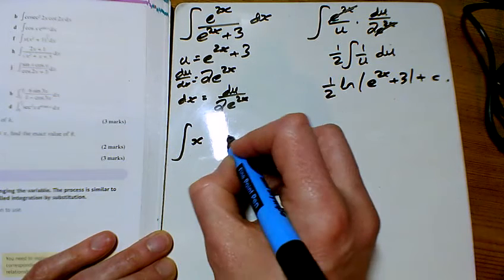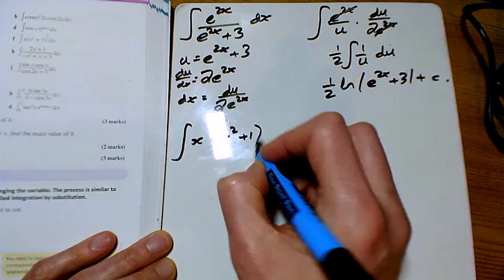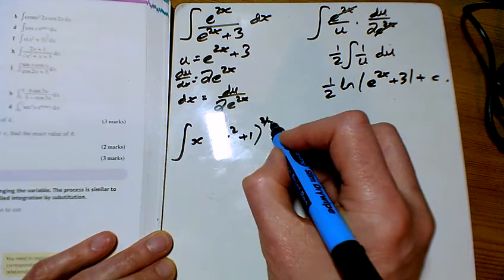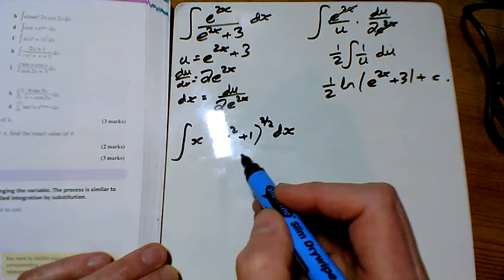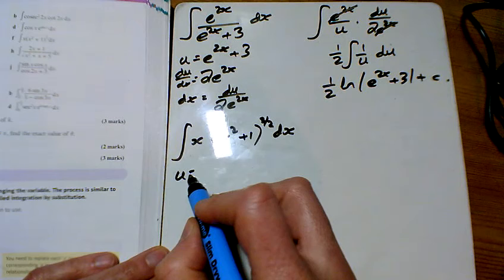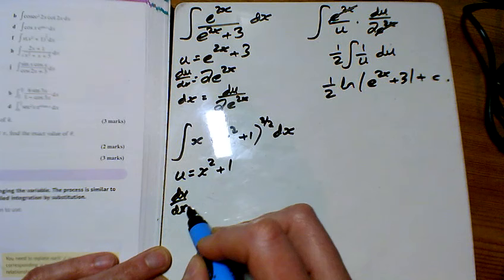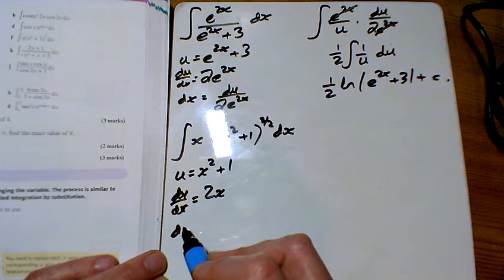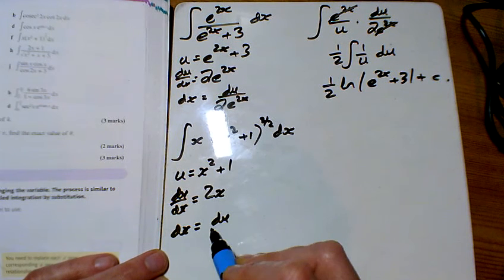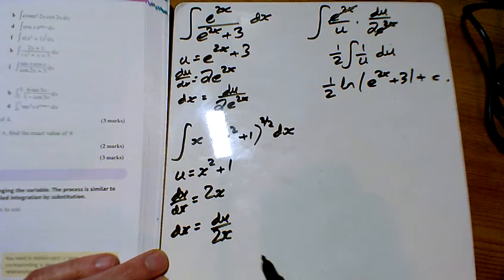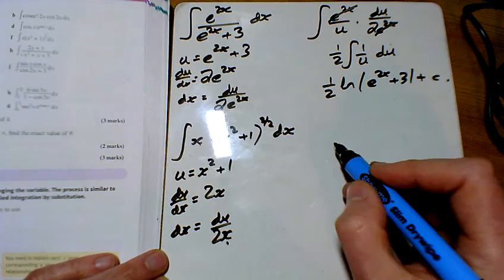For f, I've got x times x squared add 1 to the 3 over 2. I hope there's nobody left that thinks you can multiply this out. So I'm going to have u equals x squared add 1. Differentiating that gives 2x, and dx is du over 2x. Hopefully you knew that was coming because these are going to cancel out.